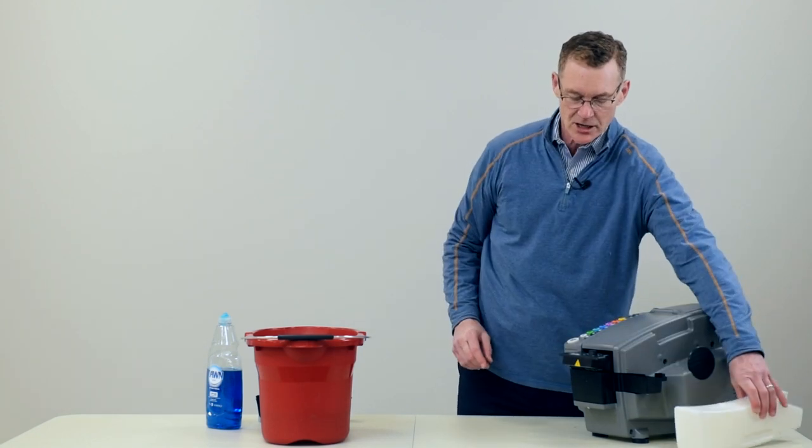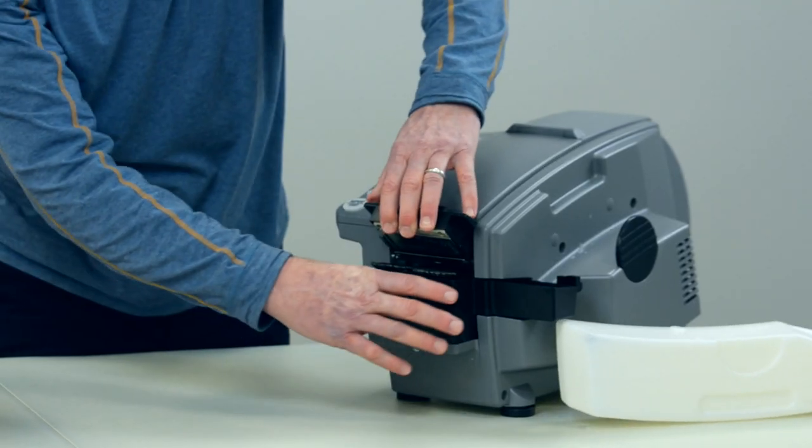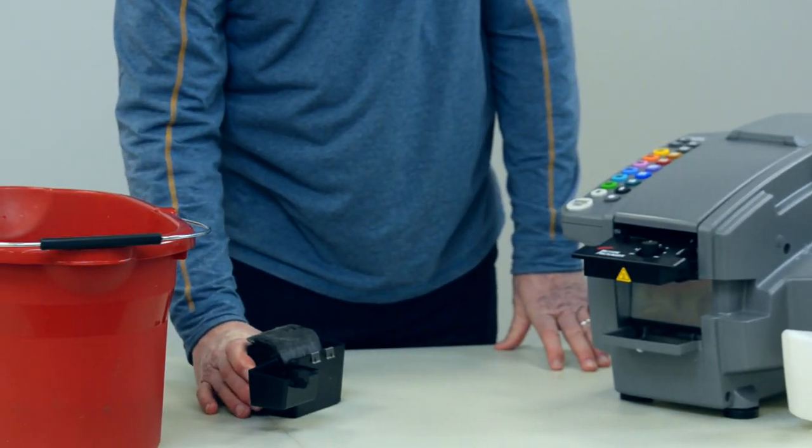Then remove the water bottle like so, lift up the heater and take the water tank out of the machine.